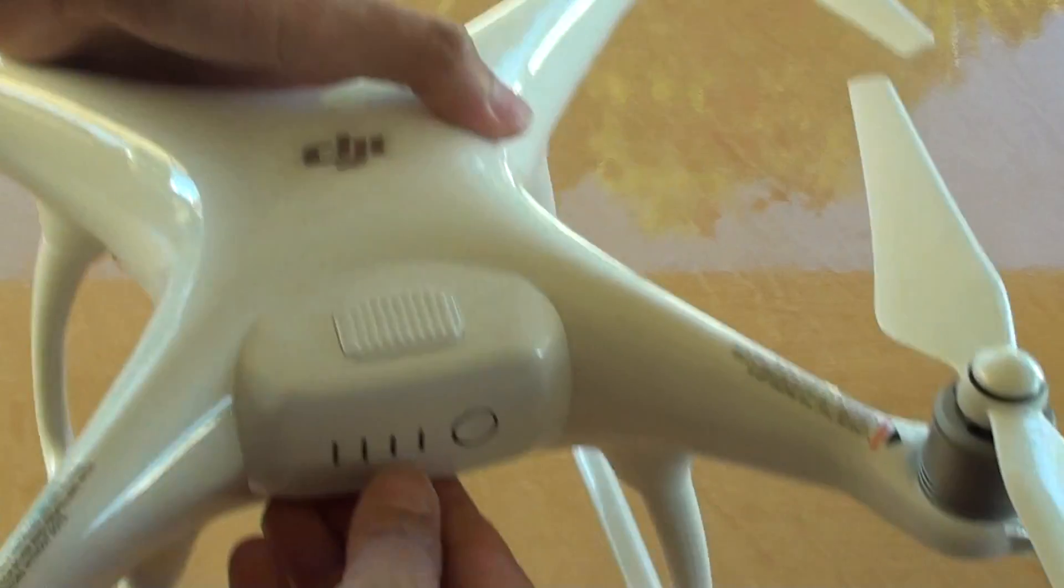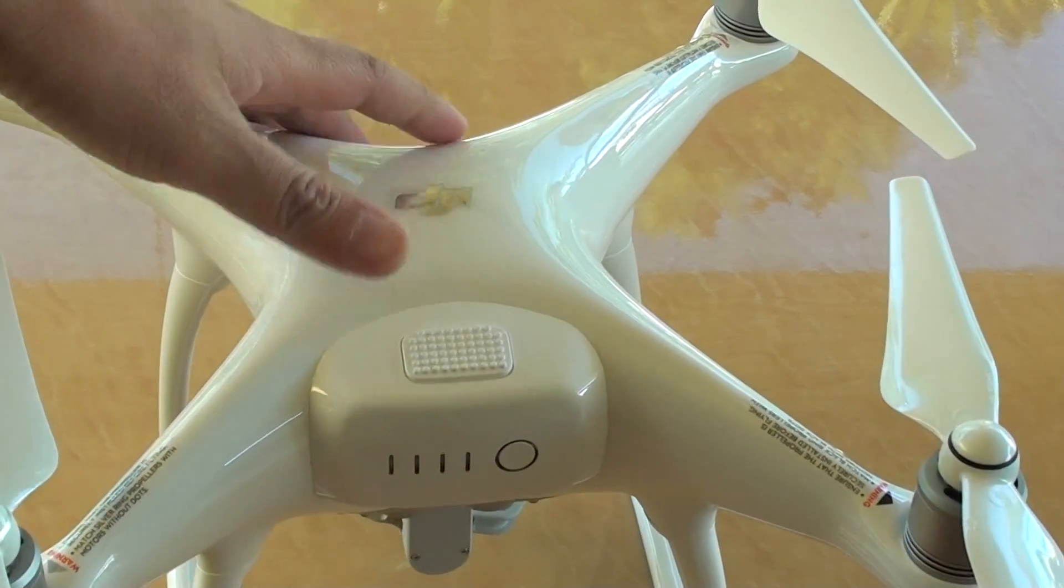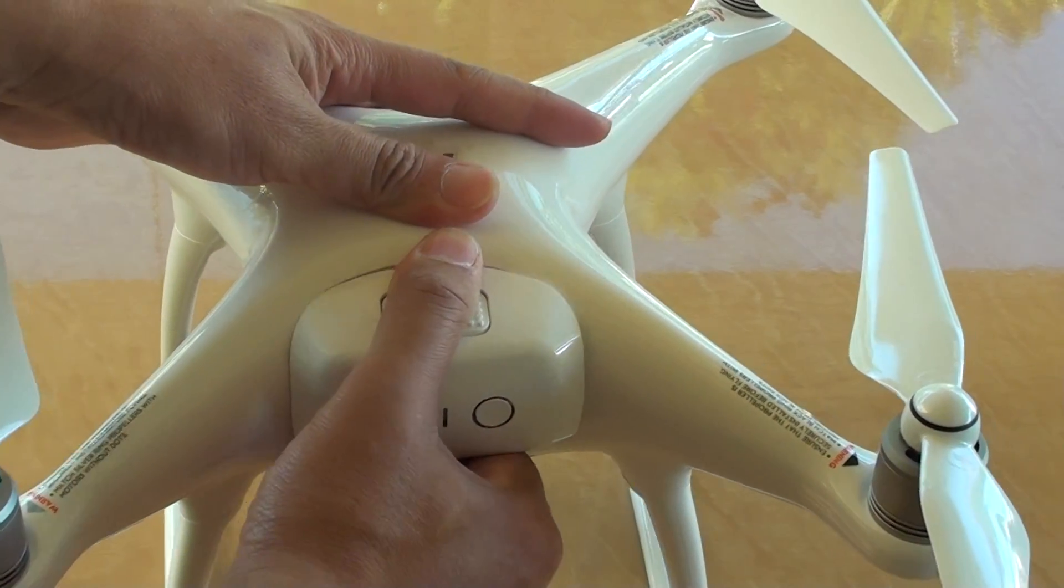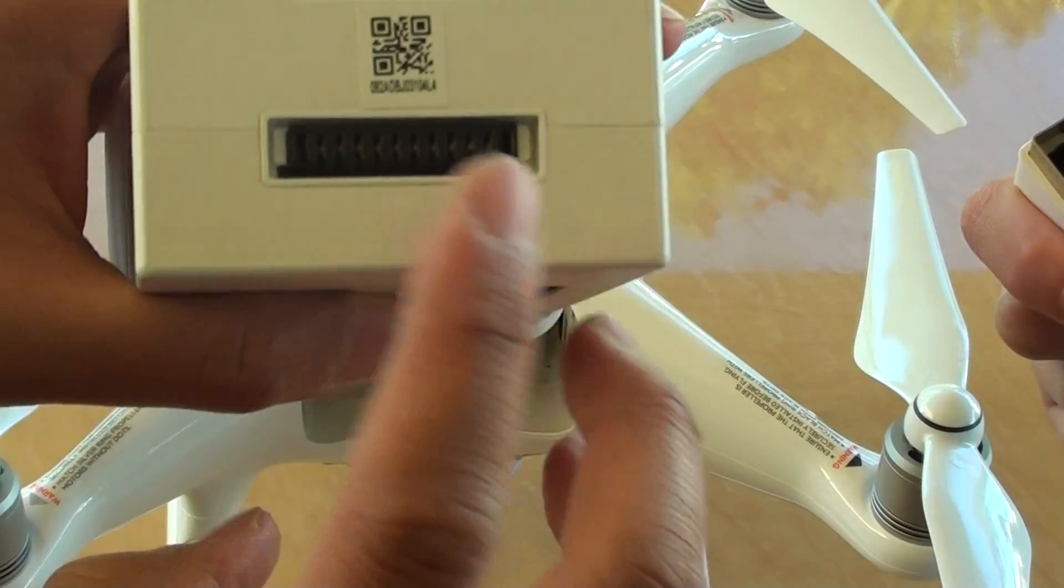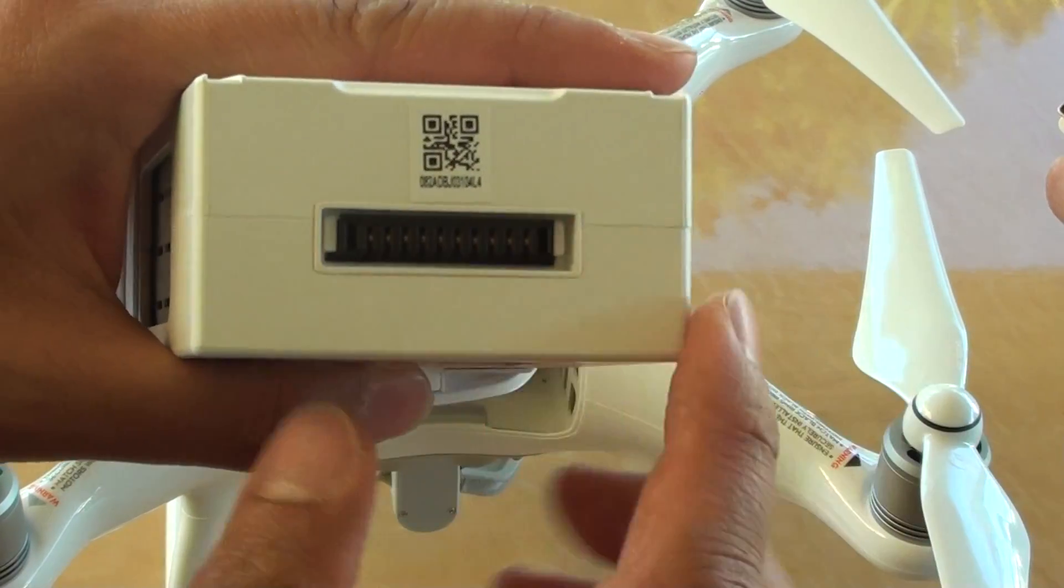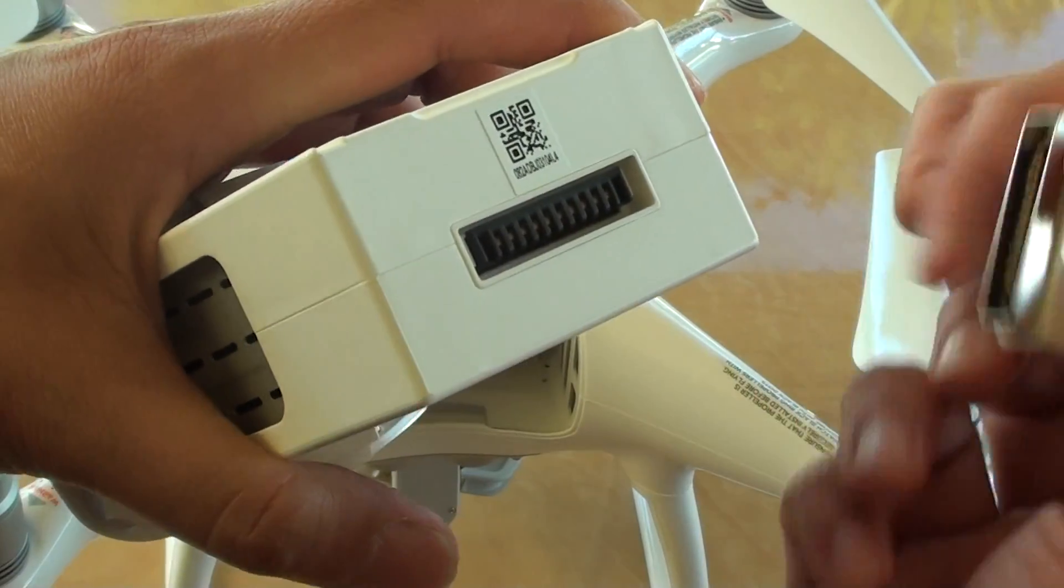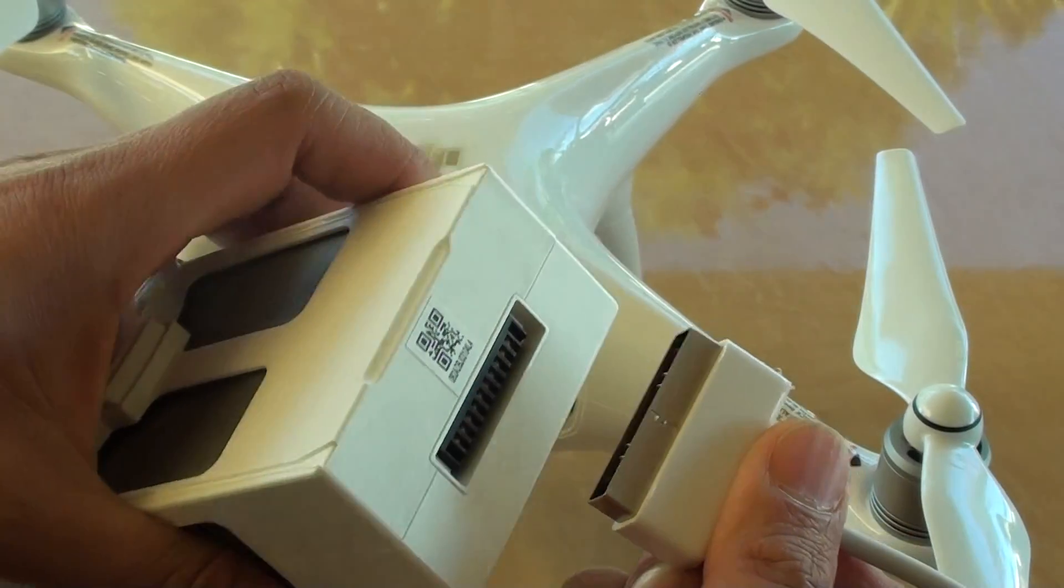Simply press the button at the bottom here and drag it out. Drag out the battery and if you turn it around, you can see the female and male connectors. We need to connect them together.